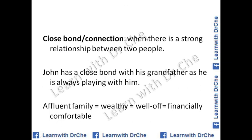'Close bond' means a strong relationship or connection. 'Close bond between two people,' 'close bond between mother and child,' 'close bond between family members.' 'John has a close bond with his grandfather as he always plays with him.' When talking about yourself, your parents, or grandparents, you can use this word. 'Affluent family' is equal to 'wealthy family' or 'financially comfortable family.'